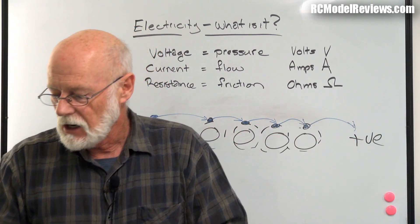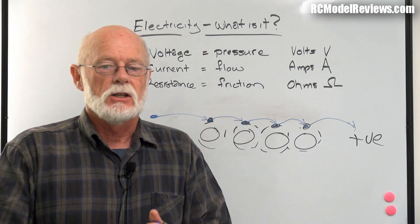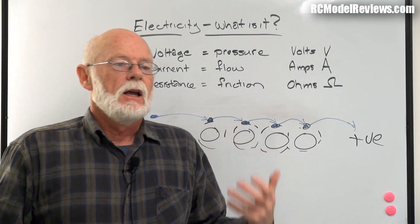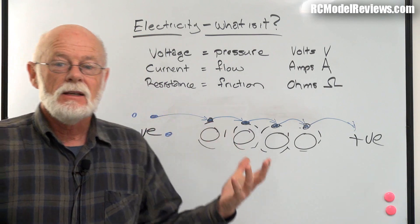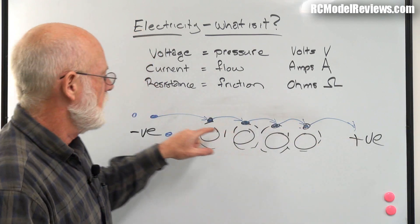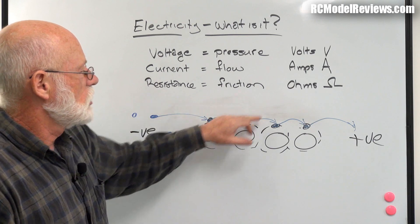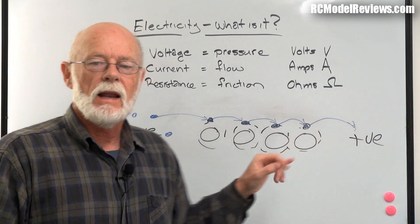In a conductor - things like copper, aluminum, graphene - these conduct electricity because the electrons here are quite happy to jump along. They don't mind jumping from one atom to another.